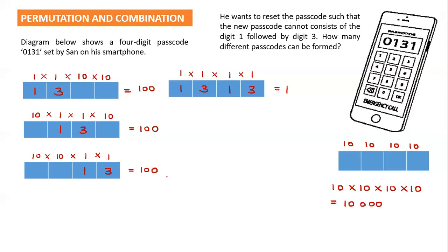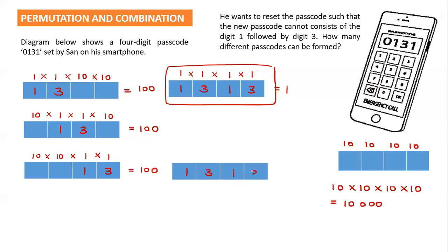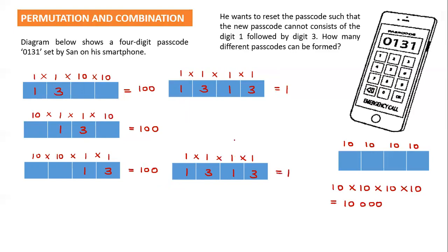Here is the problem I encountered. The passcode 1313 also appears inside the second arrangement of 100 (positions 2–3), and also inside the third arrangement of 100 (positions 3–4). So 1313 is being subtracted multiple times — it appears in the first 100 and also in the second 100. This means 1313 is double-counted in our subtraction.